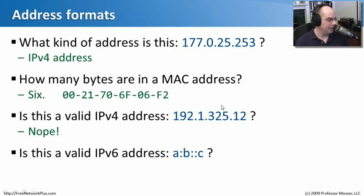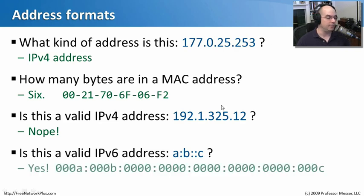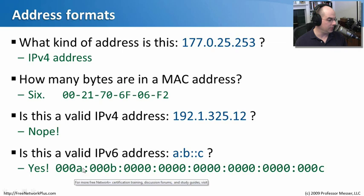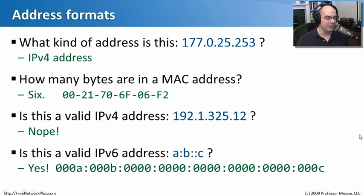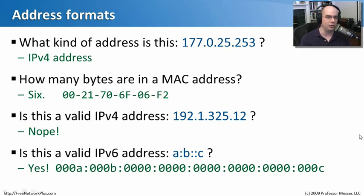Lastly, is 'A:B::C' a valid IPv6 address? Yes, it absolutely is. If you wrote it out fully, it would expand to '000A:000B:' followed by several groups of zeros, ending in '000C.' The double colon represents all those zero groups in the middle. This is a great example of taking IPv6 shortcuts — dropping leading zeros and using the double colon — to simplify a complex address into just 'A:B::C.'